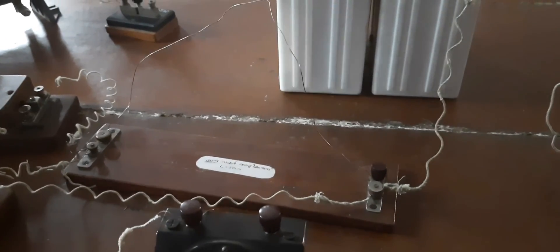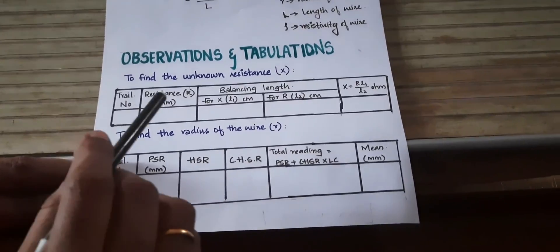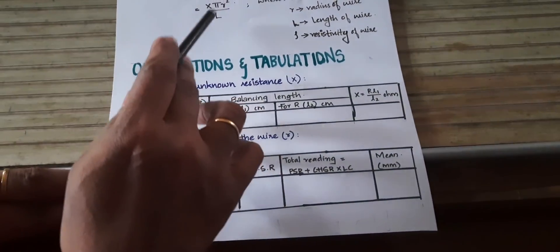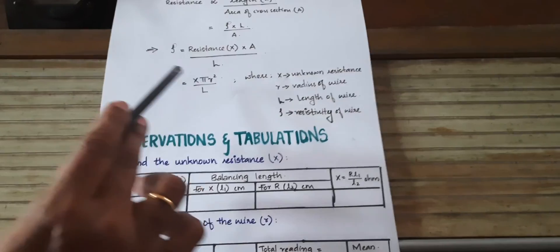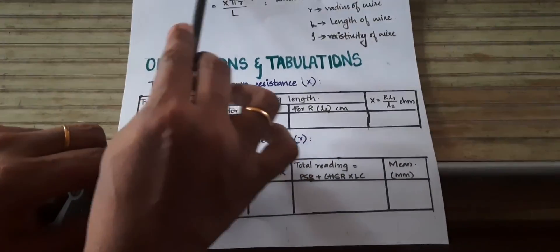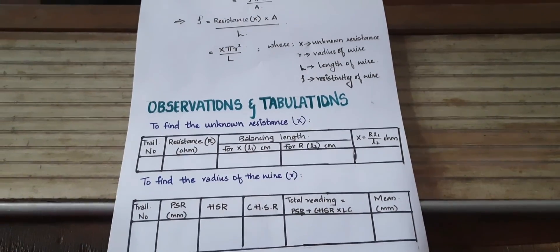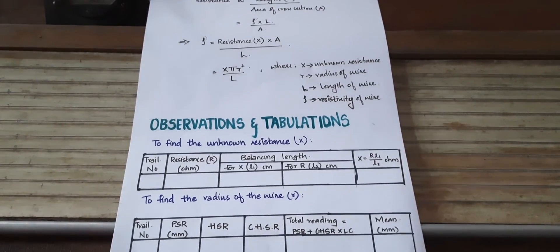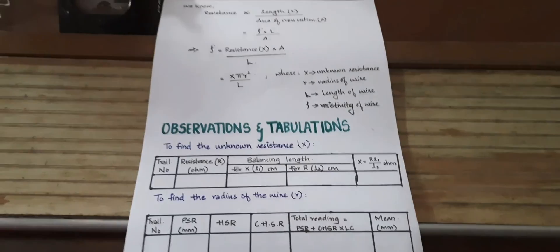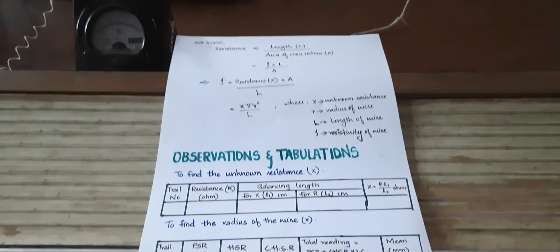By measuring the length and radius of the wire, we can calculate the resistivity of the material as rho = X × π r² / L. Through this experiment we have calculated the resistance of an unknown wire as well as the resistivity of the material of the wire. Hope you have understood this experiment. Thank you.